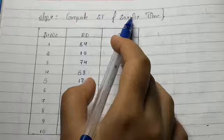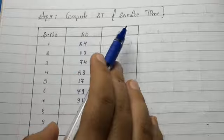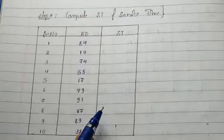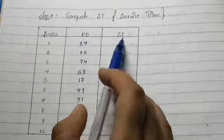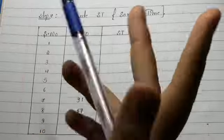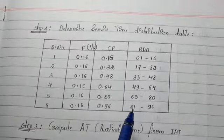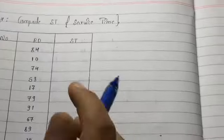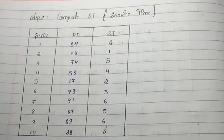The fourth step is to compute service time. We need three columns: service number, random digits, and service time. Random digits are given in the question and there are ten, so we consider one to ten. To find service time, take the first value 84, go to step two, and check where 84 lies — it falls in the 6th row, so service time is 6. Continue for the other values.